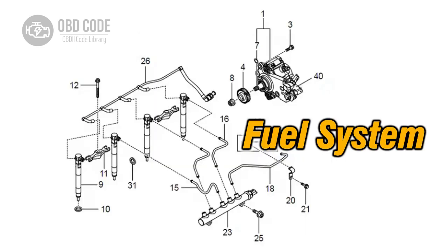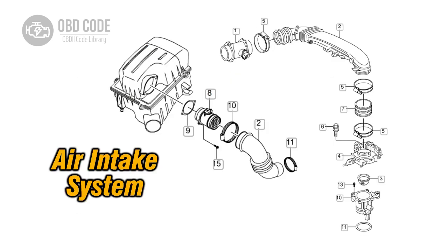4. Inspect the fuel system for any leaks, clogs, or issues with the fuel pressure regulator that may be causing a lack of fuel delivery to the engine, resulting in a lean condition. 5. Perform a smoke test to check for any additional leaks in the intake system or engine components that could be contributing to the lean condition, and address any leaks found during the test.